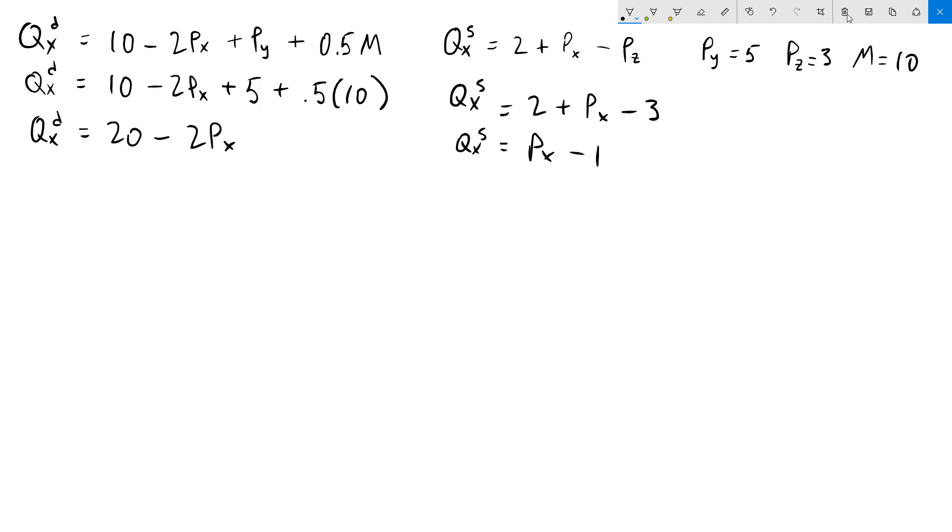To figure out the equilibrium price, we will set the quantity demanded equal to the quantity supplied. So what we'll have is 20 minus 2Px equals Px minus 1. I'll add 1 to both sides. 21 minus 2Px equals Px. Add 2Px to both sides. 21 equals 3Px.